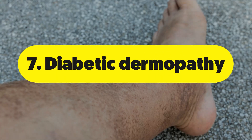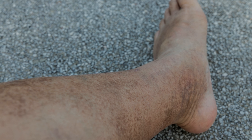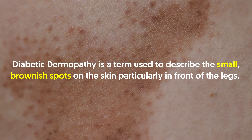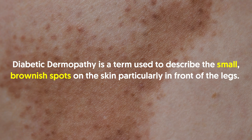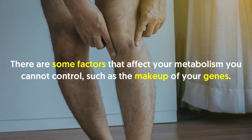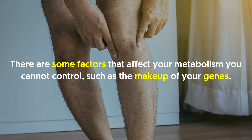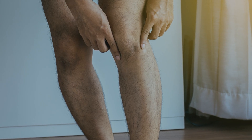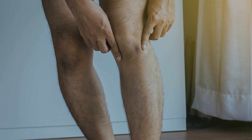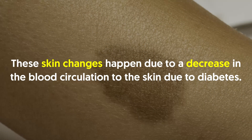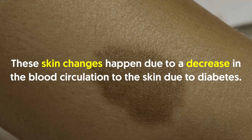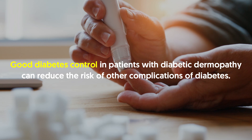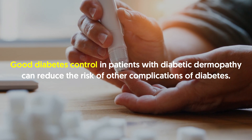Number seven: diabetic dermopathy. Diabetes, particularly poorly controlled diabetes, can affect the skin in many ways. Diabetic dermopathy describes small brownish spots on the skin, particularly on the front of the legs. Patients usually develop no symptoms from these spots, which occur in about 55 percent of diabetes patients and are more common in older patients with long-standing diabetes. The skin changes happen due to decreased blood circulation to the skin. How to reverse it: good diabetes control can reduce the risk of other complications.